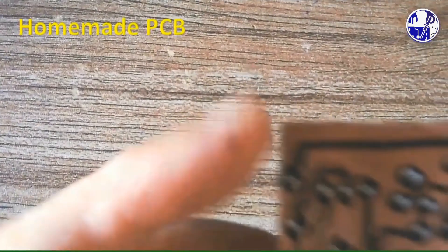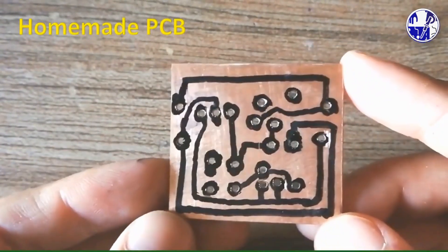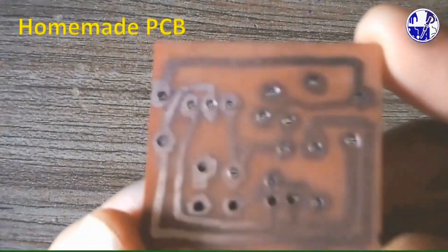Next, use a drill machine to make holes on the copper sheet. After the etching process, you will have a homemade PCB ready for your project.